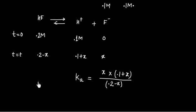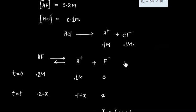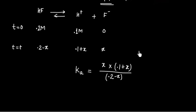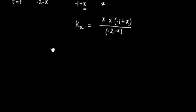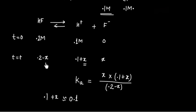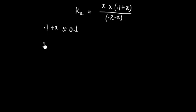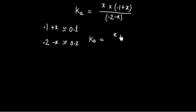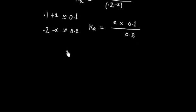To solve this we use two assumptions. First, since H⁺ is mainly coming from HCl at 0.1 M, we can ignore X with respect to 0.1, so 0.1 plus X is approximately 0.1. Second, dissociation of HF is very small so X is very small compared to 0.2, meaning 0.2 minus X is approximately 0.2. So Ka equals X times 0.1 divided by 0.2, giving X equals 2 times Ka.